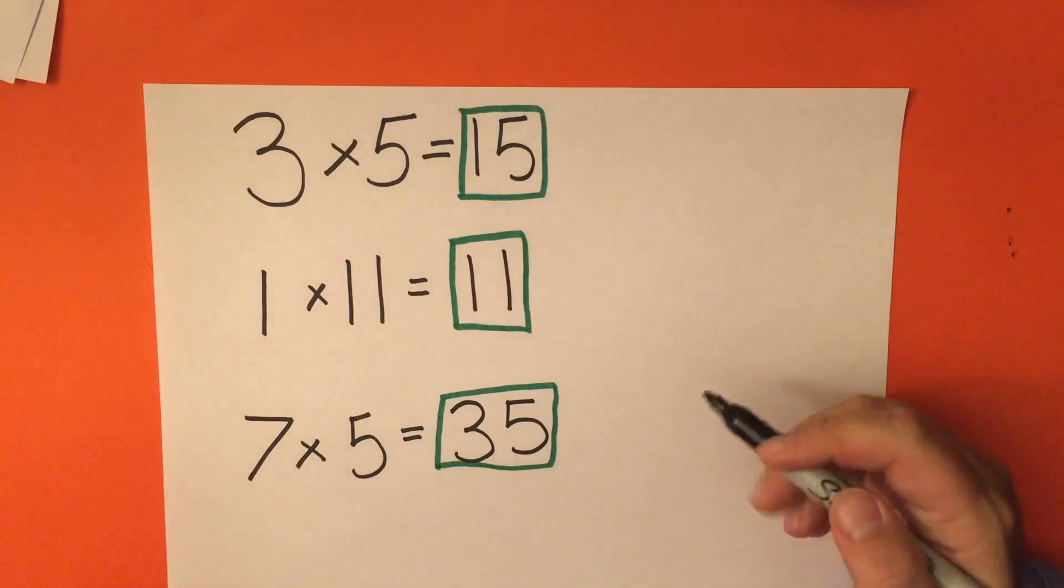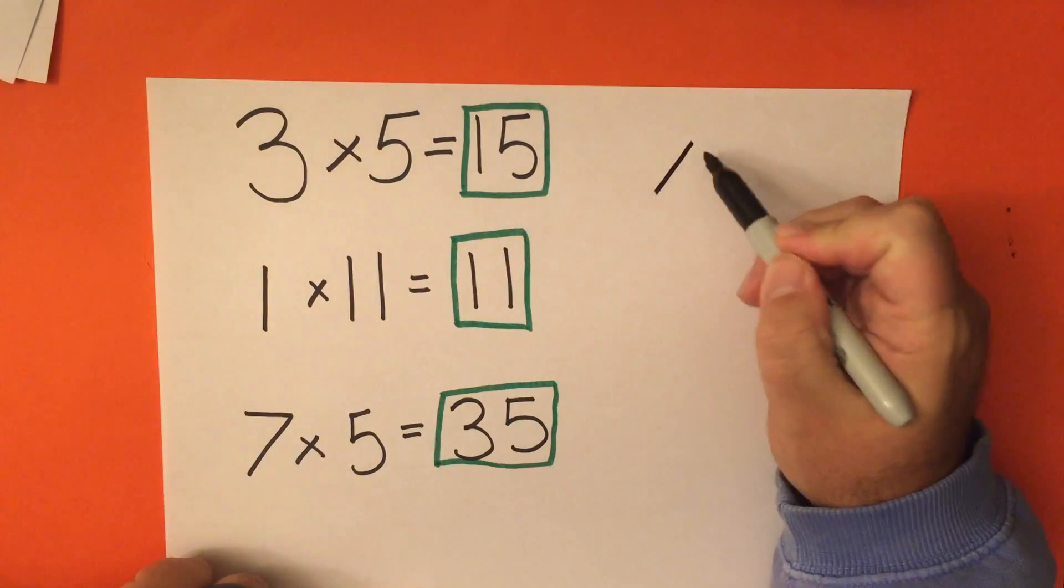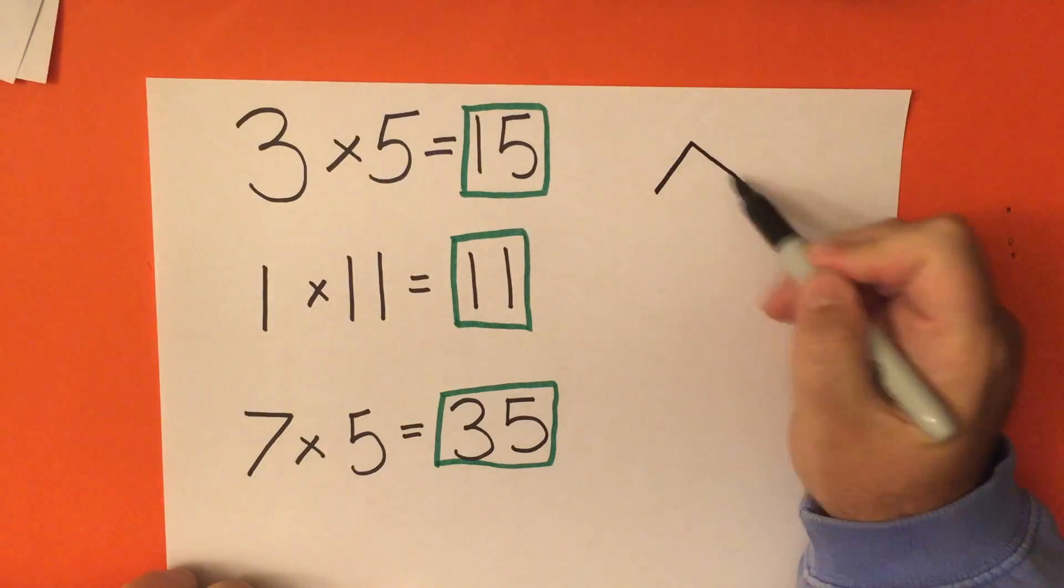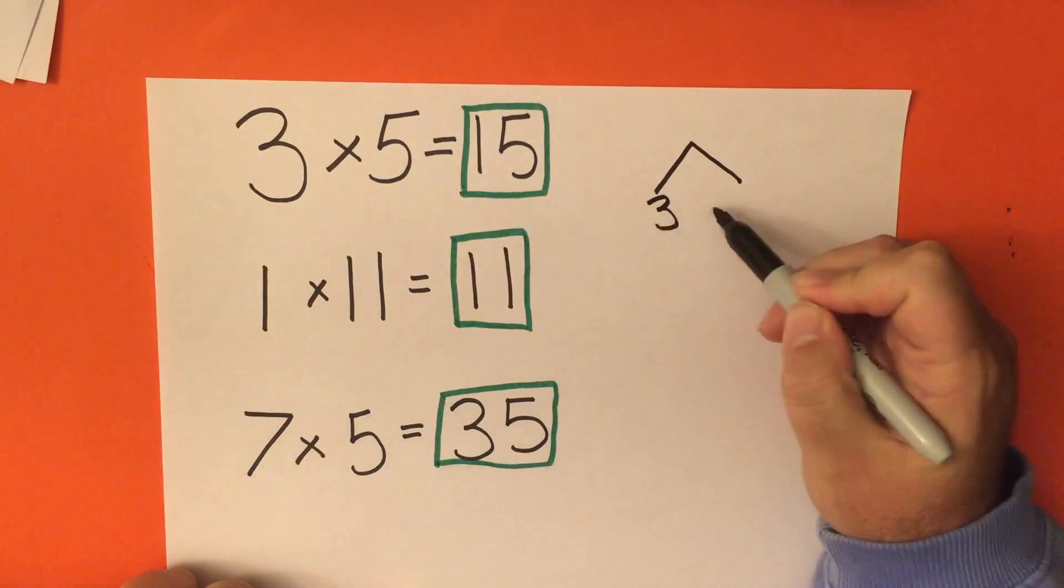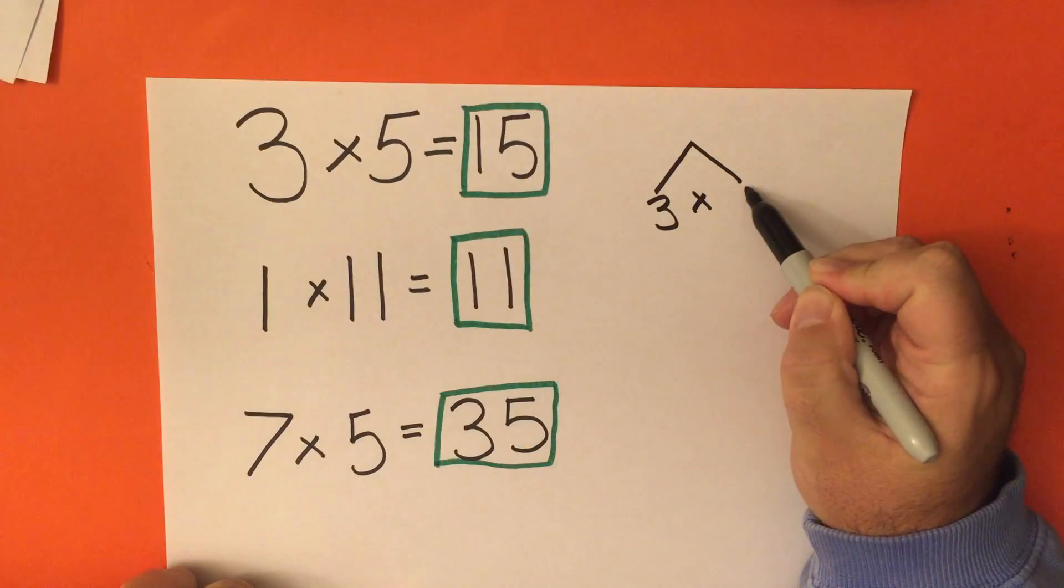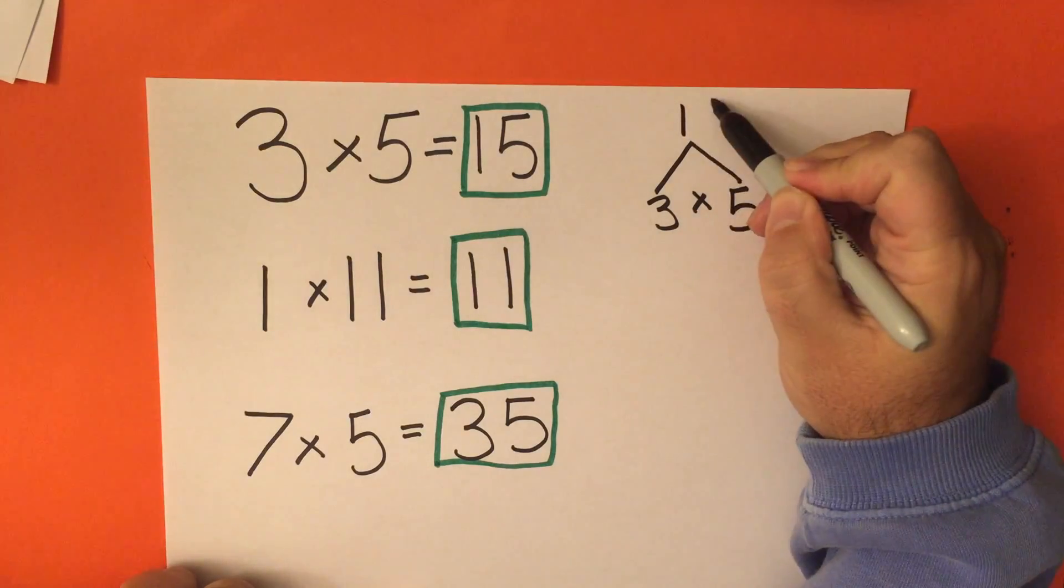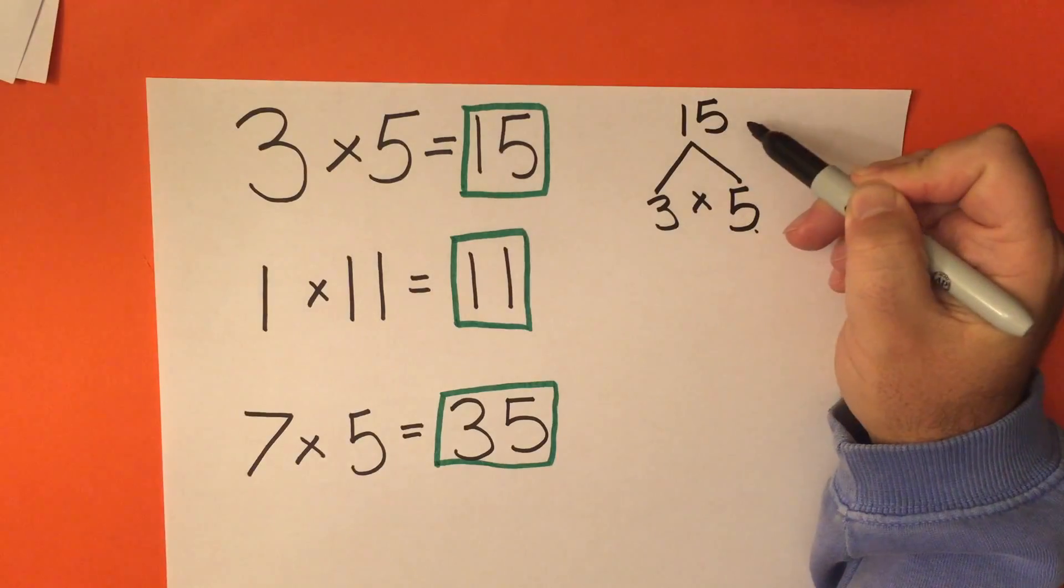So, I'm going to go ahead and draw a factor tree with the roots down here, or what I like to call the roots, with our two factors, and then our answer, or multiple, up at the top.